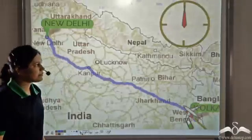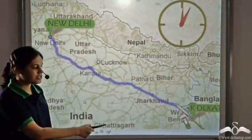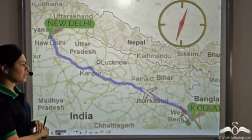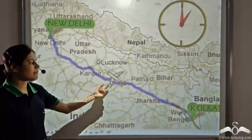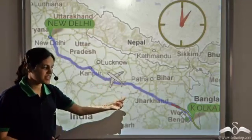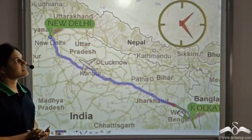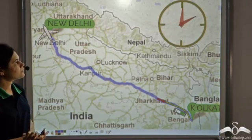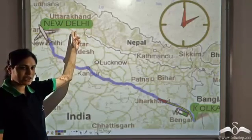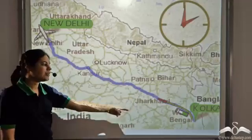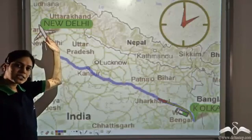Now let us see what happens if we take time to be constant. We have plane, bus, and train. Observing them in one hour: the plane has travelled the maximum distance, the train is in West Bengal, and the bus is still in Kolkata. After two hours, the plane has already reached New Delhi, the train is in Jharkhand, whereas the bus is still in West Bengal. So the plane has covered the maximum distance.